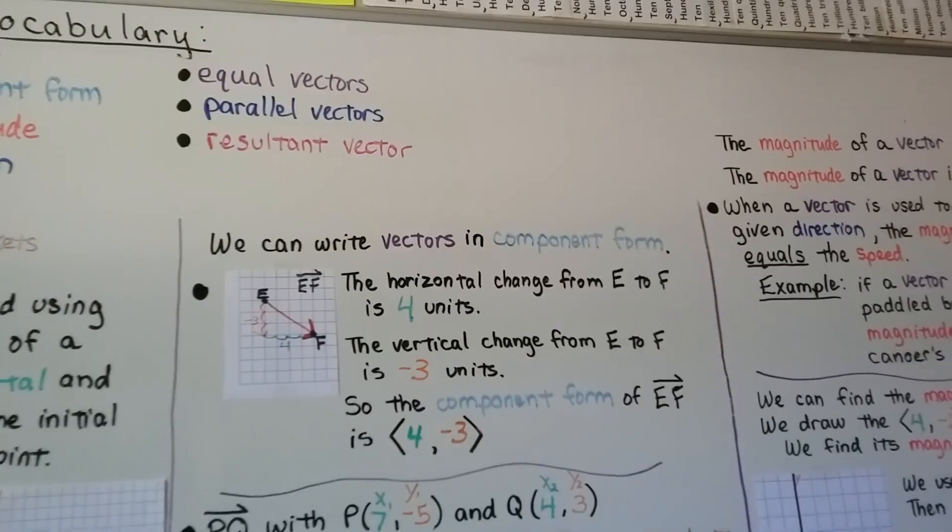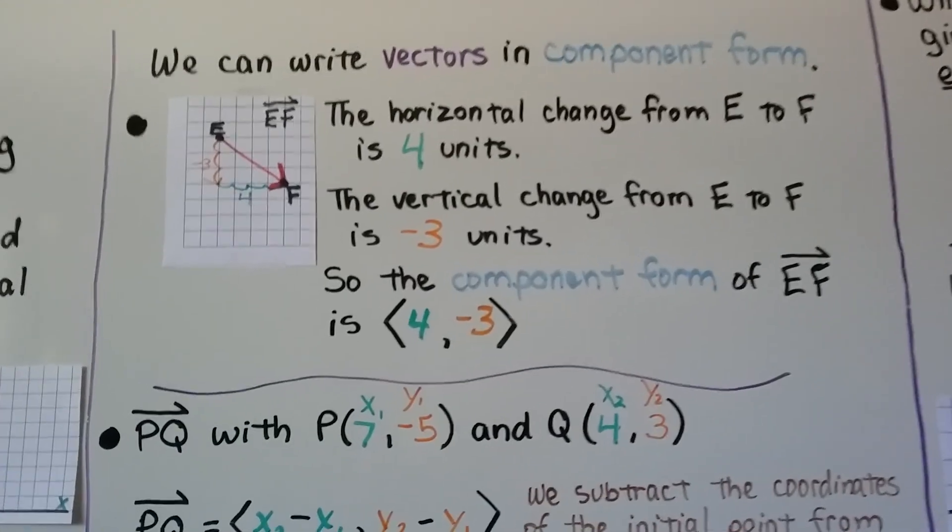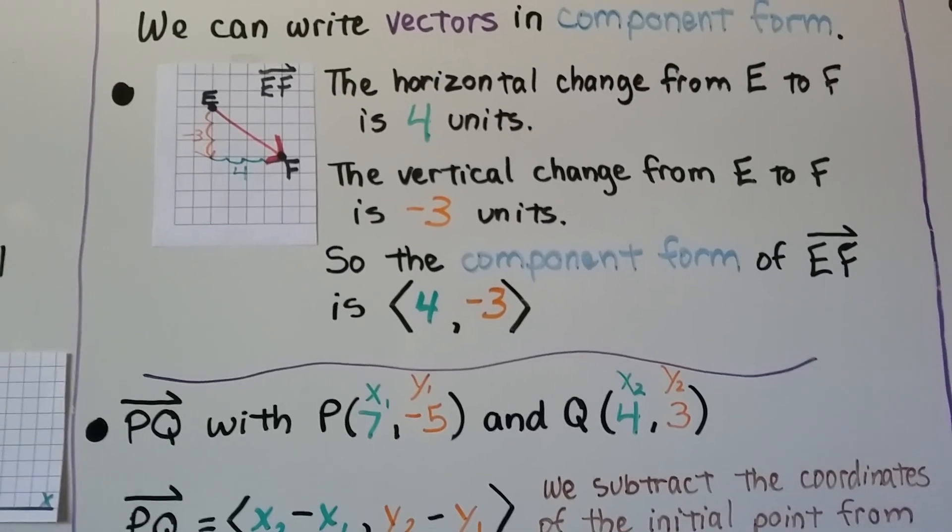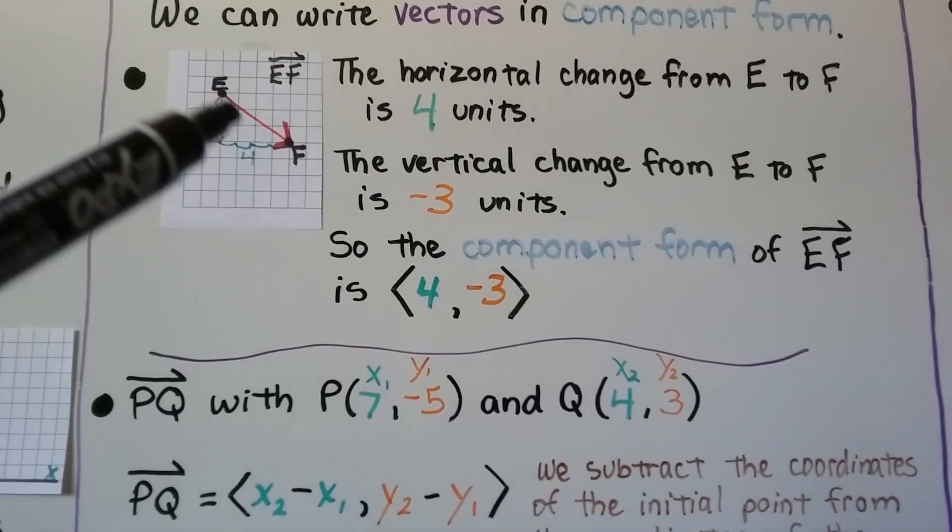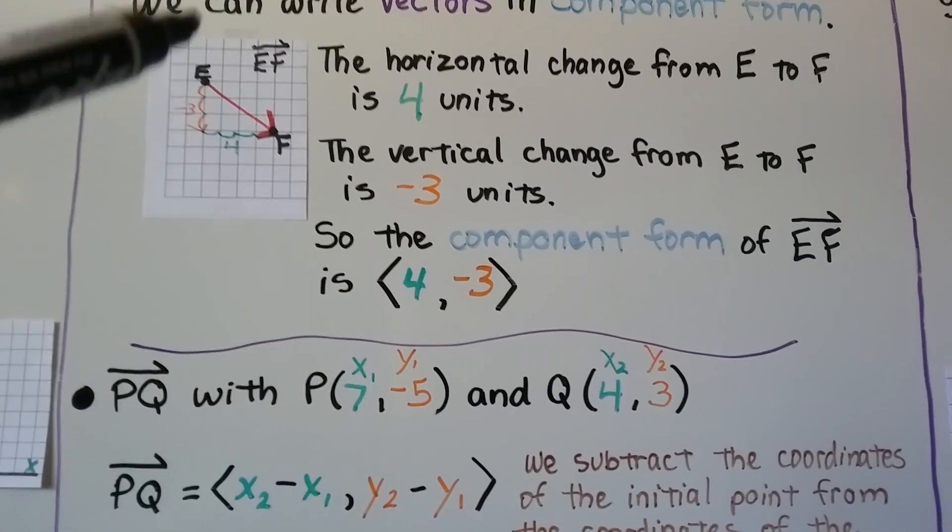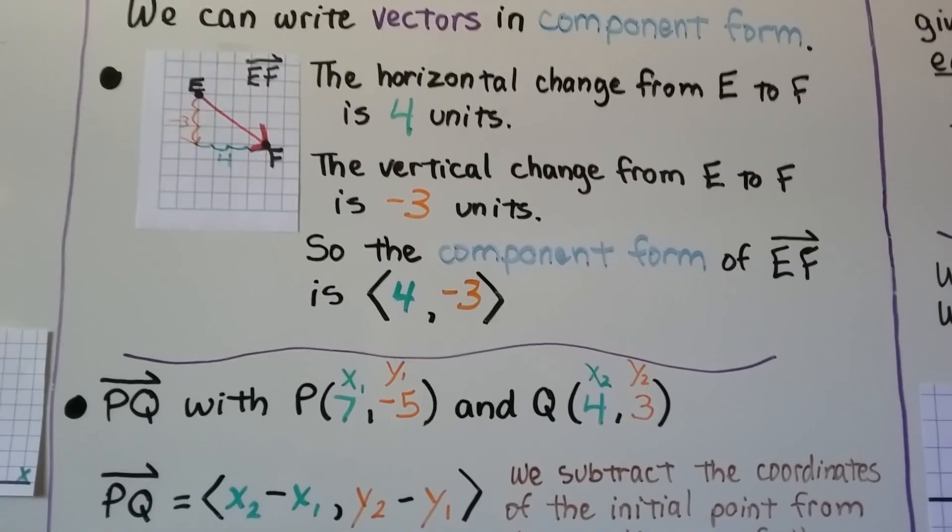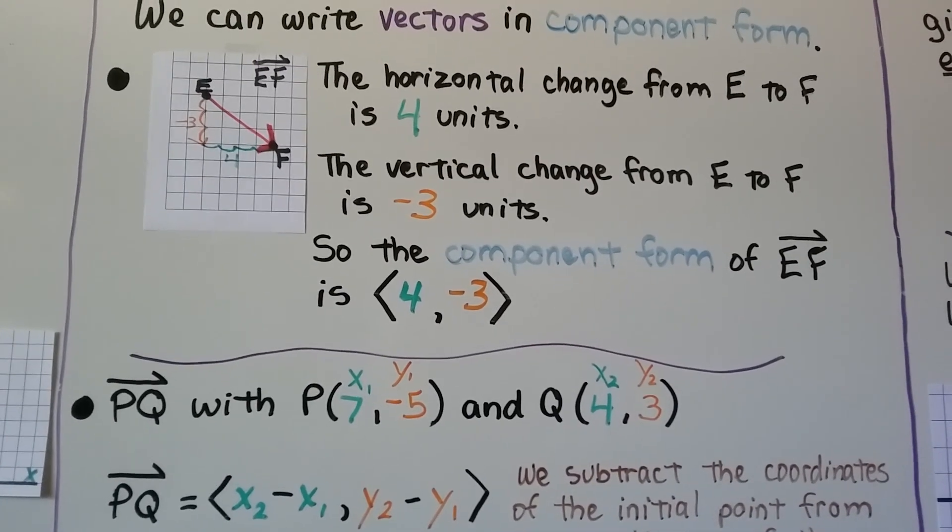We can write vectors in component form. Here we've got vector EF. And the horizontal change from E to F is 4 units. The vertical change from E to F is negative 3 units. So the component form of vector EF is 4, negative 3.